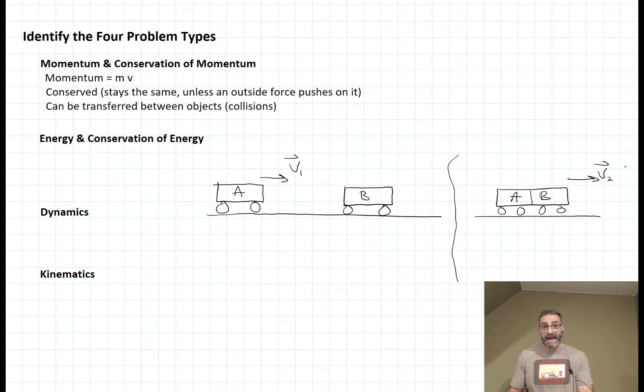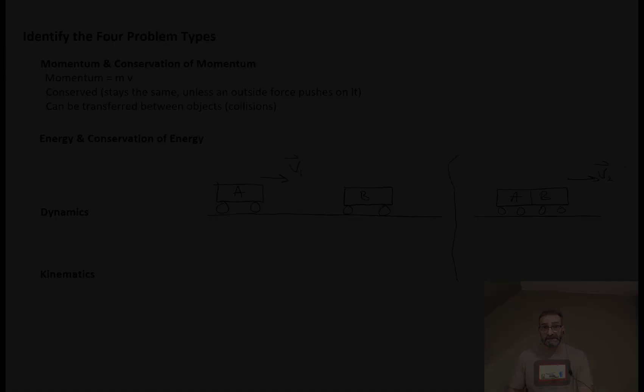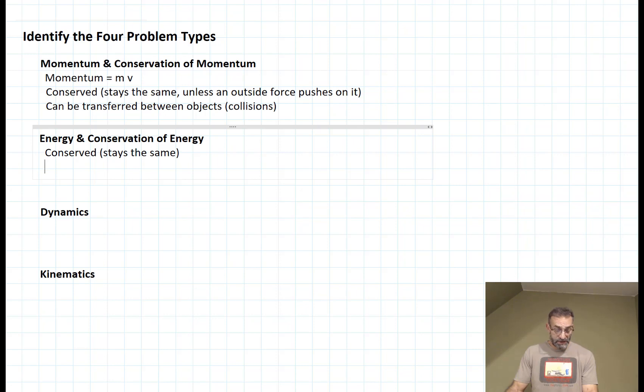You could say that cart A lost some of its momentum and gave it to cart B, and cart B gained some momentum. Or you could say the total momentum of the system is the same. At the beginning of the problem it's all in cart A, and at the end of the problem it's split between carts A and B.